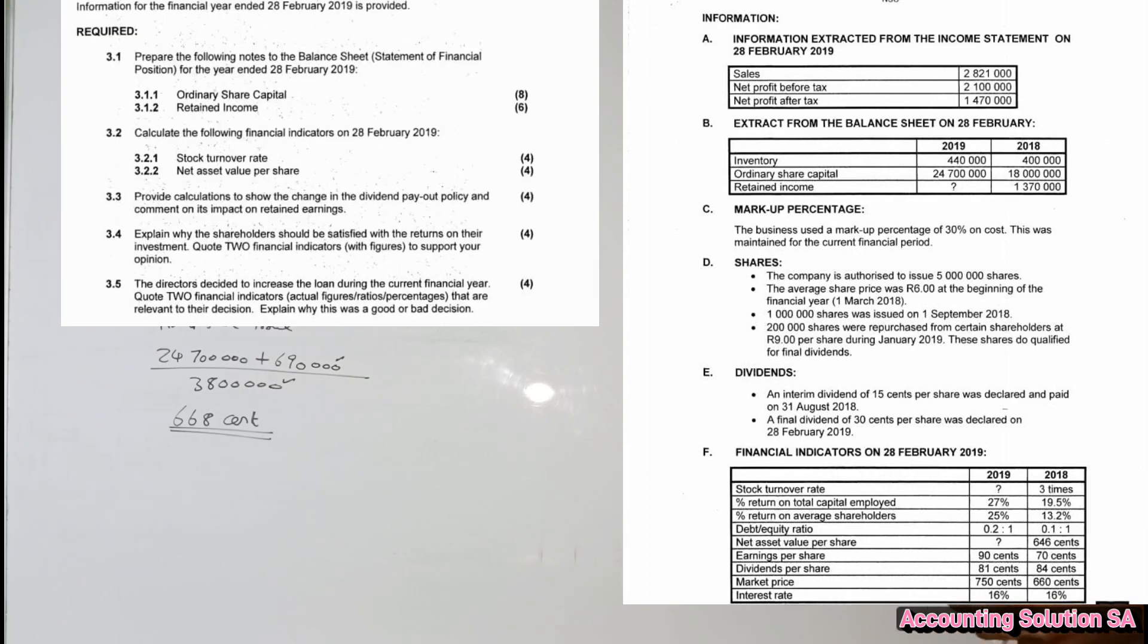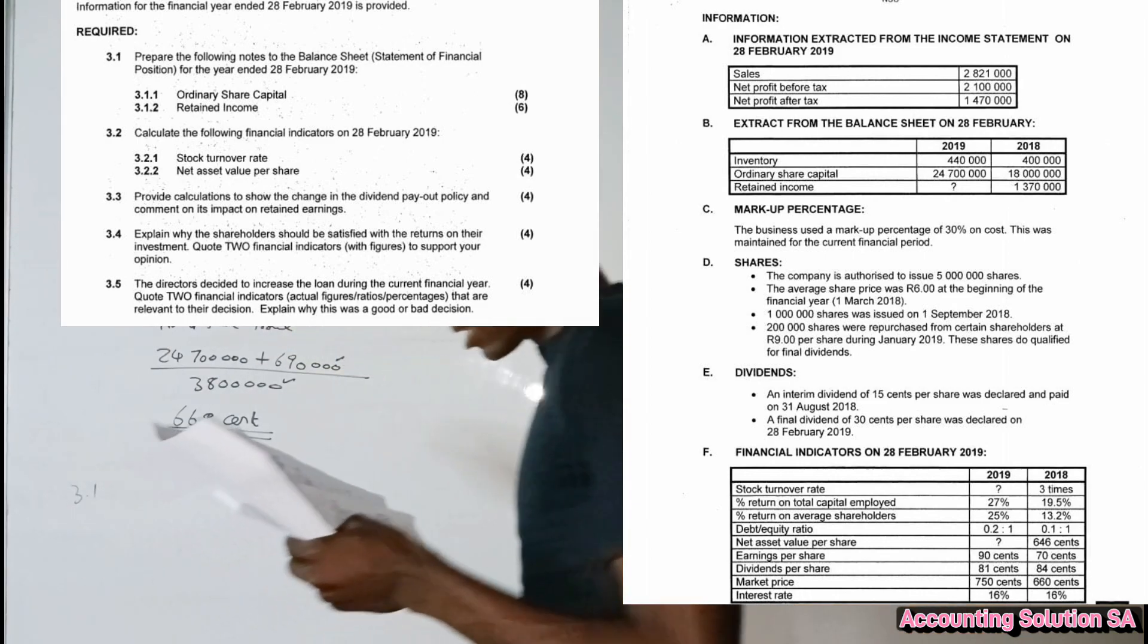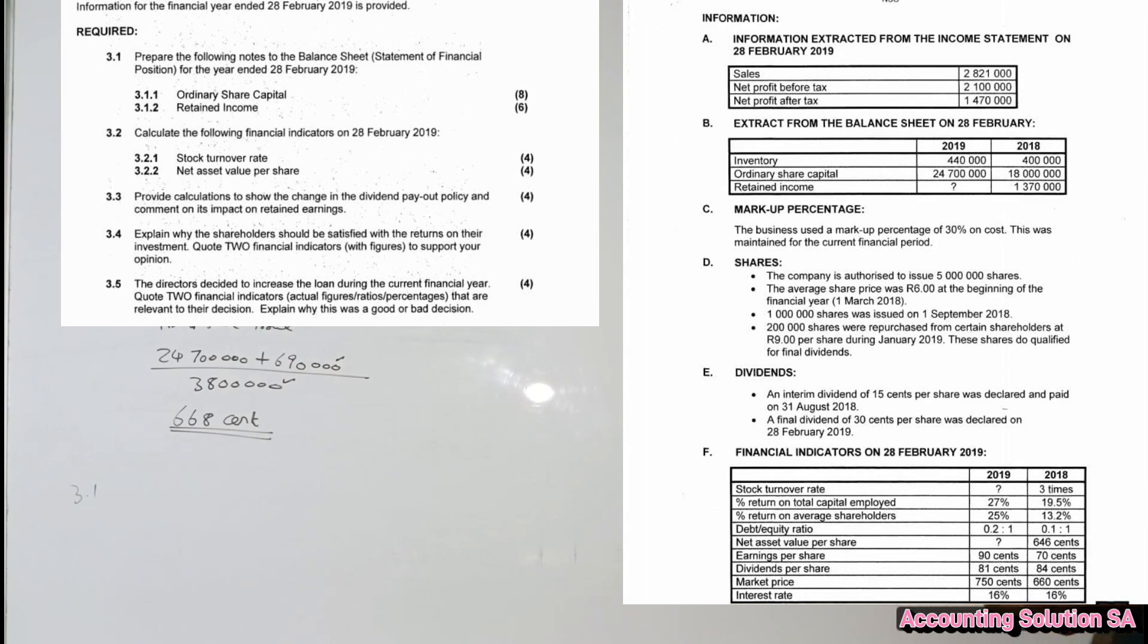Now let's answer 3.3. They said provide the calculation to show the change in dividends payout policy and comment on the impact on retained earnings. So now let's comment on this one. Dividends yield 3.3, dividends yield, you must know the formula first. The formula said dividends per share divided by earnings per share.